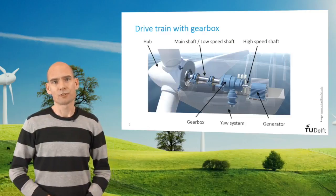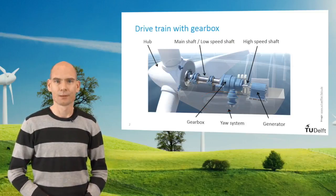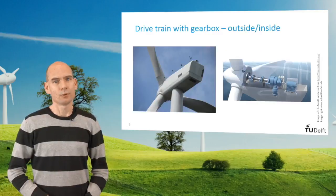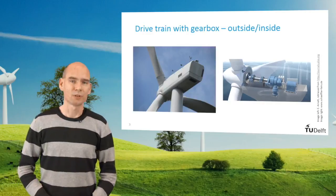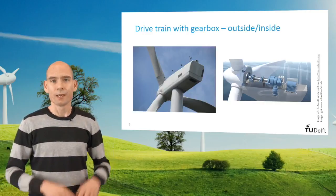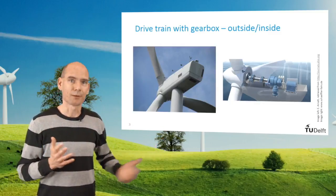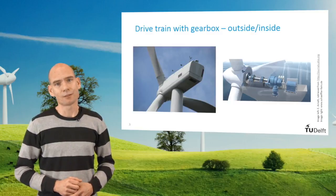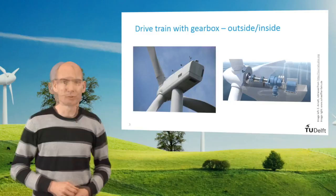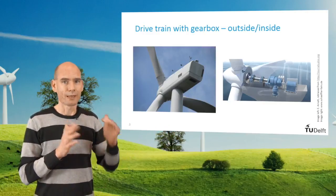The nacelle connects to the tower top through the yaw system, which enables the turbine to align itself with the wind. You will recognize the outside of this type of turbine as many turbines of this type have been built on land. It has the shape of a campervan, but be aware it is usually much bigger. The drivetrain is an elongated assembly of several medium-sized components and therefore the nacelle is relatively long, but not so high and wide.